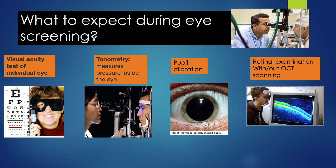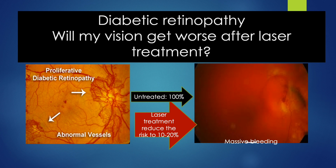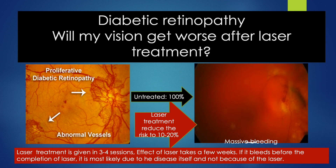In some centers, they may perform additional tests. If the patient has retinal swelling or abnormal vessels with or without bleeding, they might need anti-VEGF treatment. This is given by injecting the drug inside the eye under local anesthetic. This injection can help to shrink abnormal vessels and prevent recurrent bleeding. However, the drug does not last long inside the eye, so you may need repeated injections depending on the eye condition.